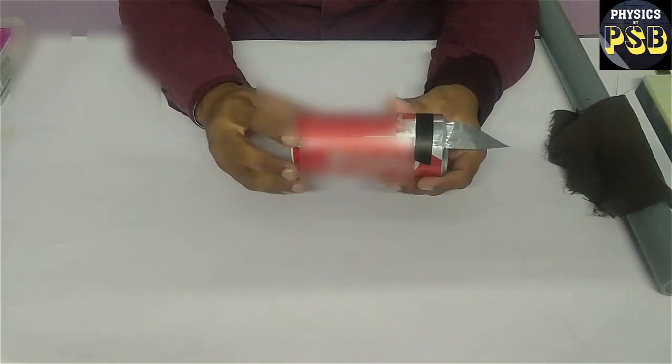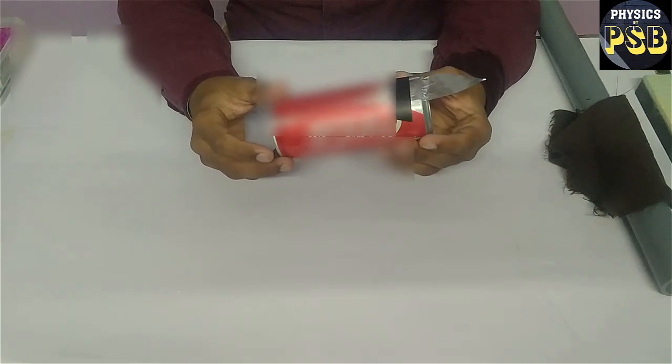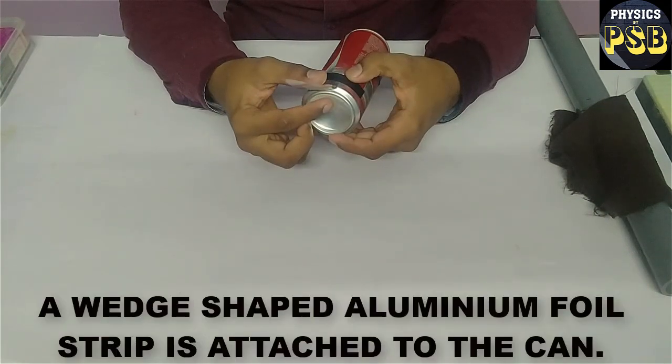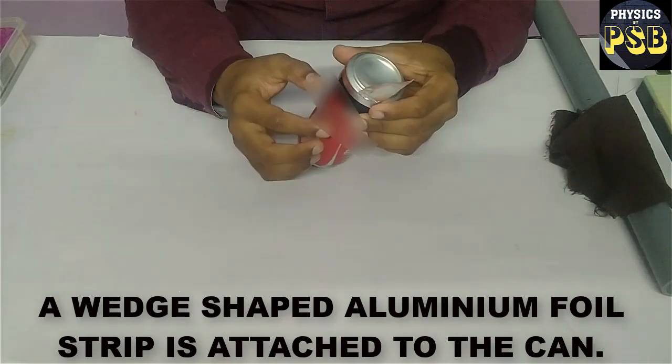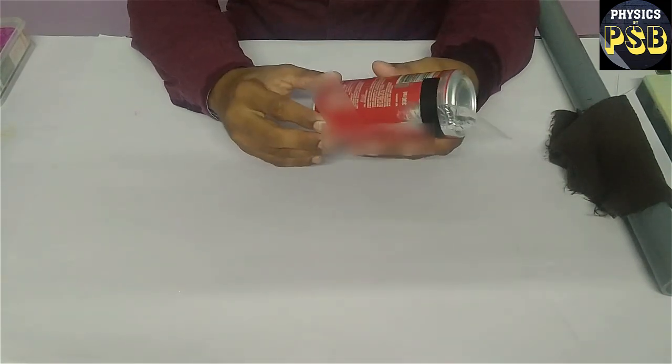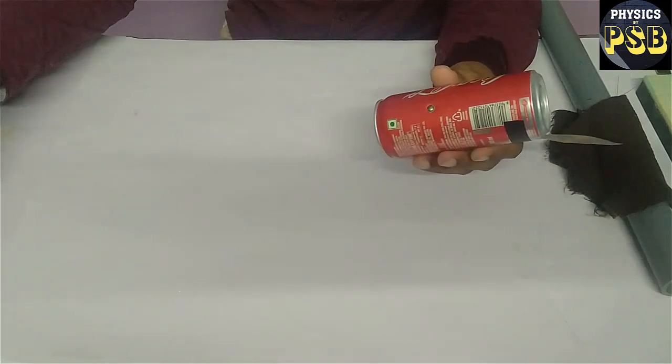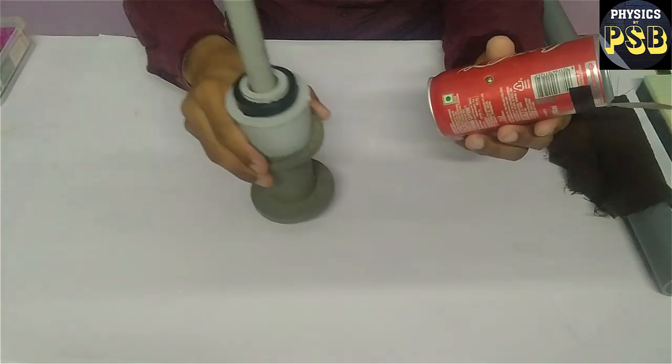To demonstrate electrostatic induction, I take one aluminum can to which I have attached a small piece of aluminum foil which is cut in this shape. I will place this on an insulating stand of this kind.